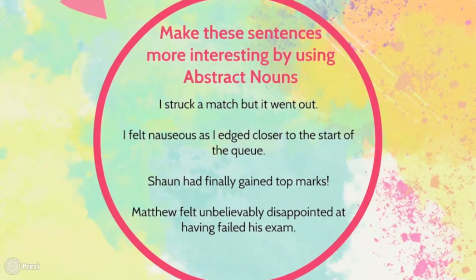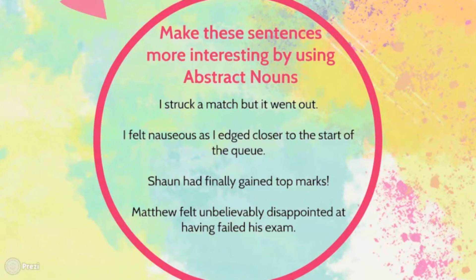Now I want you to have a go at looking at these sentences below and make them more interesting by using abstract nouns. The sentences are: 'I struck a match but it went out,' 'I felt nauseous as I edged closer to the start of the queue,' 'Sean had finally gained top marks,' and 'Matthew felt unbelievably disappointed at having failed his exam.' Think about the feelings or emotions the characters would have and use those as your abstract nouns. Pause the video now, have a go, then restart and I'll give you some examples.